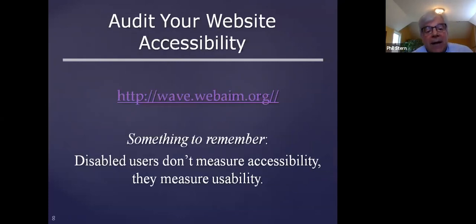And in fact, there is a website and I'll be sharing this entire PowerPoint with Naomi, with Disability Rights New Jersey. You can audit your website accessibility using a site, http://wave.webaim.org—one word. And you'll see this when we get the final PowerPoint. And another transformational foundational aspect of this conversation is that disabled users of technology don't measure accessibility. They measure usability, simply want to be able to use it.